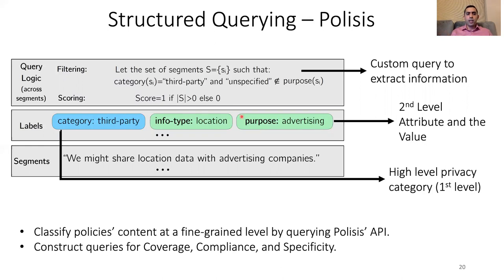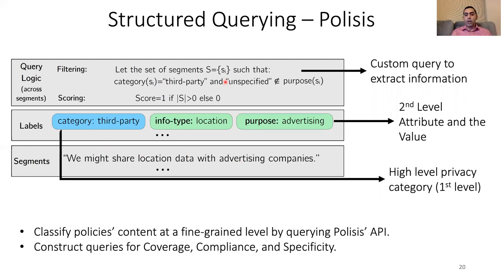Using this machine-readable representation, we can map our analysis to queries on these tags. For example, a query returns one if there are segments where the category is third-party and the purpose is unspecified. It filters segments by matching their tags — for instance, a segment describing sharing with an unspecified purpose like advertising would satisfy this clause and receive a score of one. We use this methodology to construct queries for coverage, compliance, and specificity.